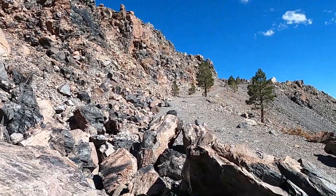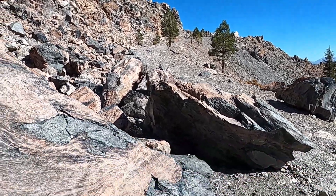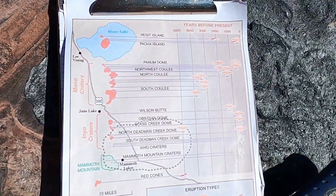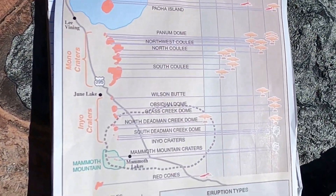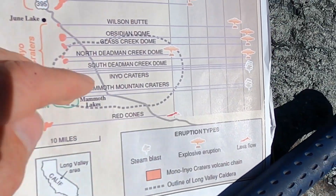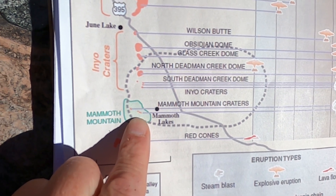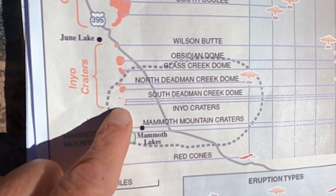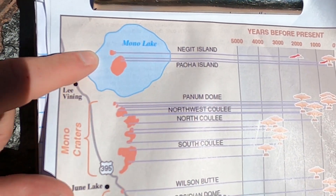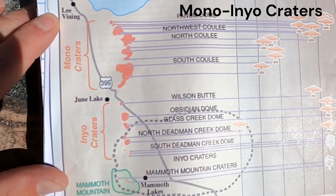Let's start with a regional context about Obsidian Dome, because it's an interesting volcano in its own right, but it's actually part of a series of volcanoes — a whole chain that more or less starts near Mammoth Mountain on the east side of the Sierras and extends northward to Mono Lake. This is called the Mono Inyo Craters chain of volcanoes.